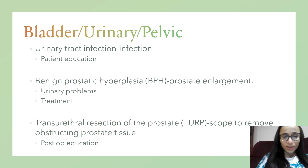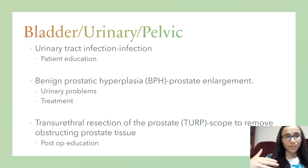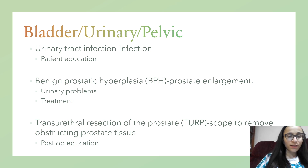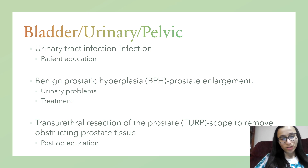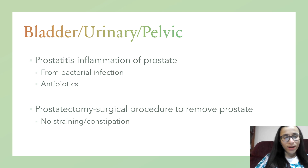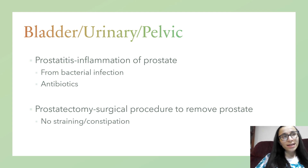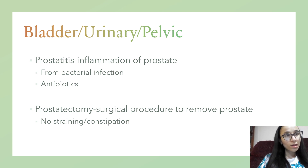Benign prostatic hyperplasia (BPH) is an enlarged prostate — when the prostate is enlarged, urine cannot flow well. Treatment is medications like finasteride and symptom management; surgery may be needed called TURP — transurethral resection of the prostate. Prostatitis — 'itis' means inflammation — is inflammation of the prostate caused by bacterial infection. Treat with antibiotics. Symptoms include urinary hesitancy, urinary urgency, and burning.